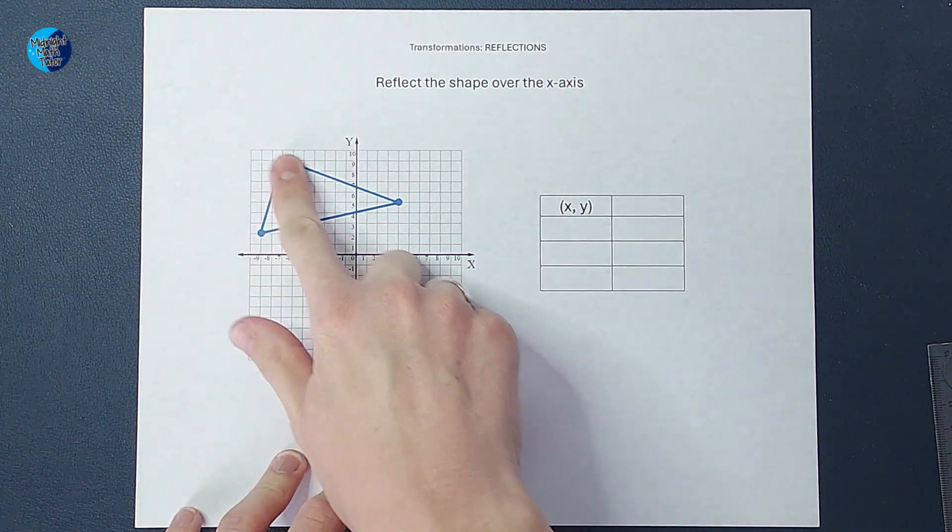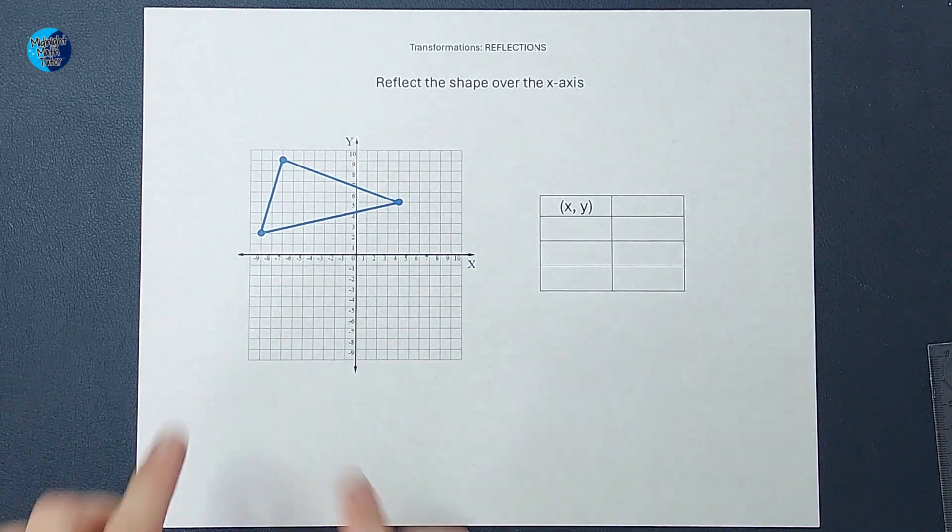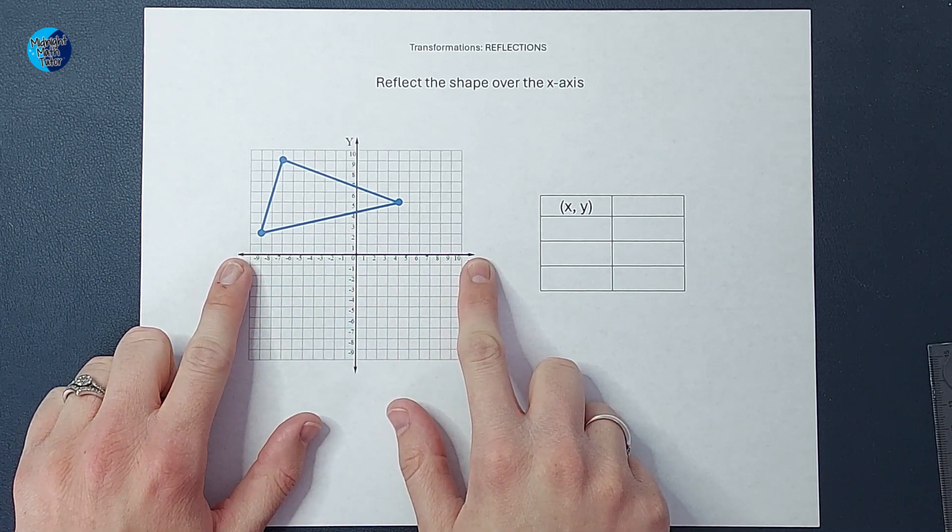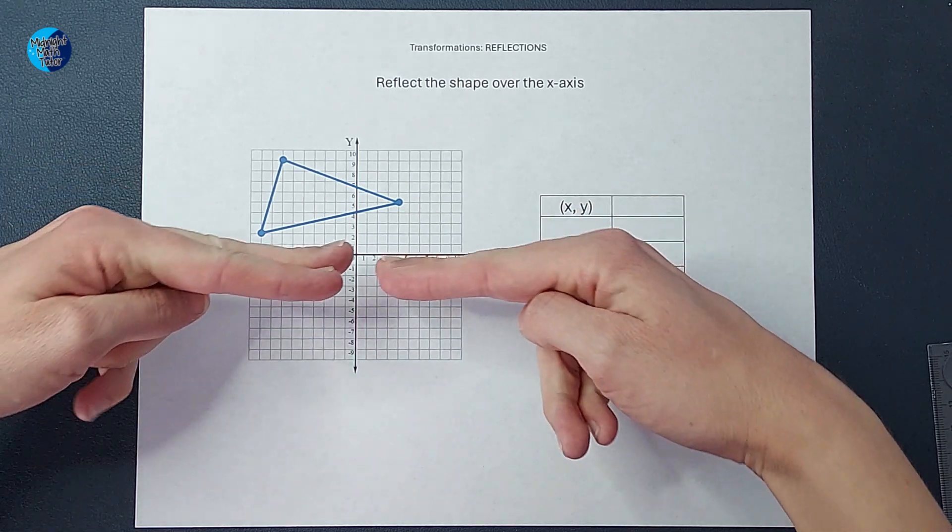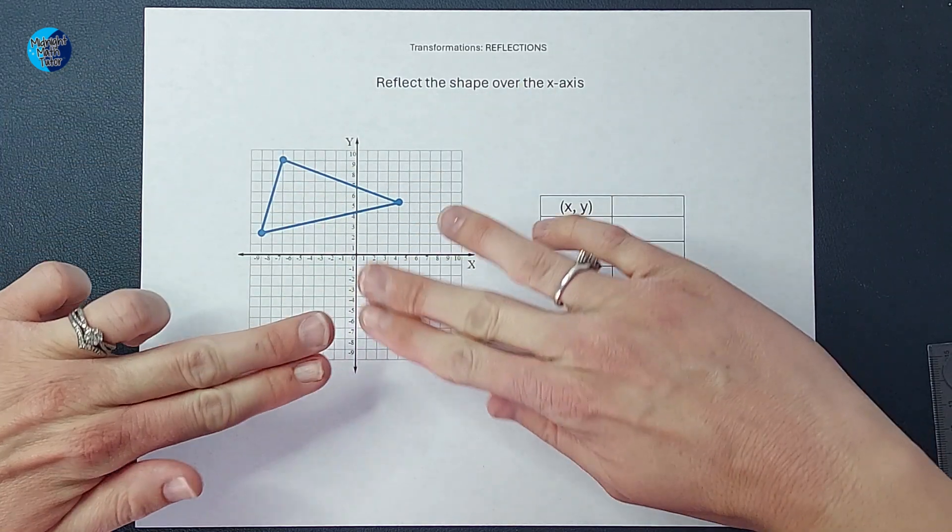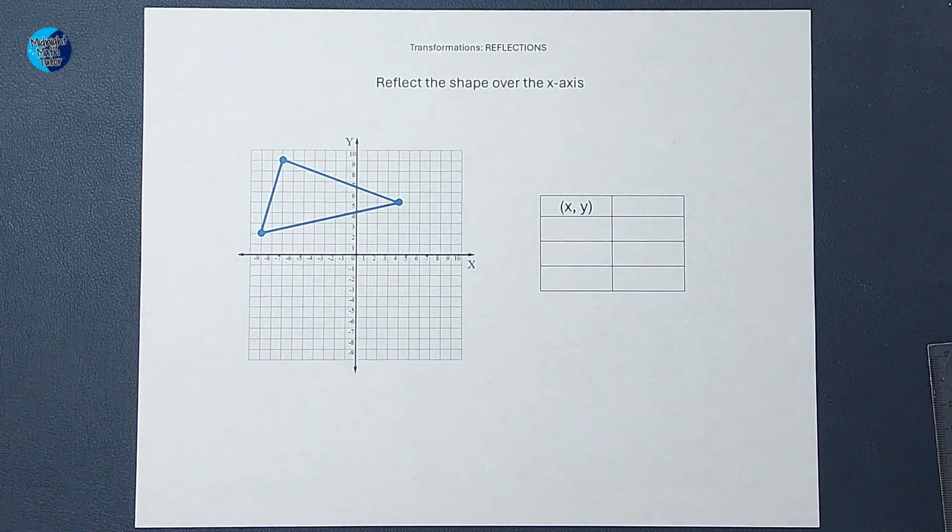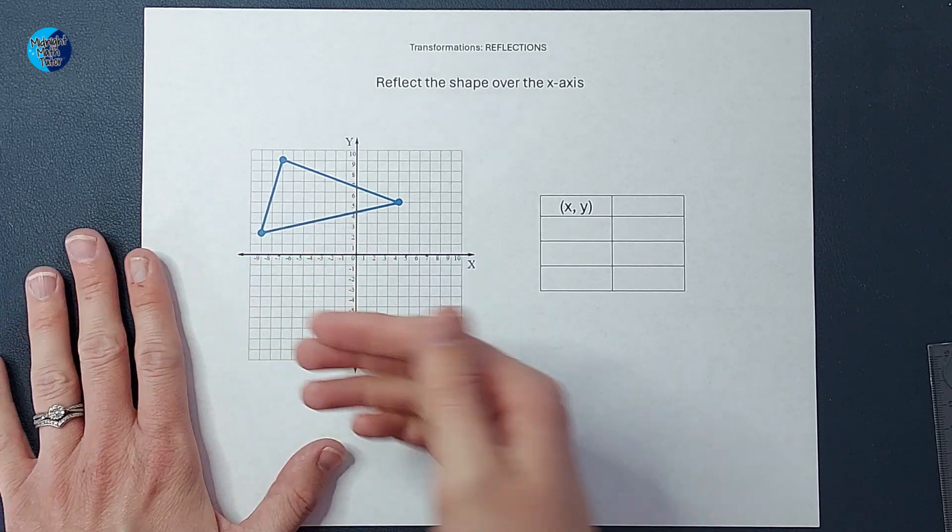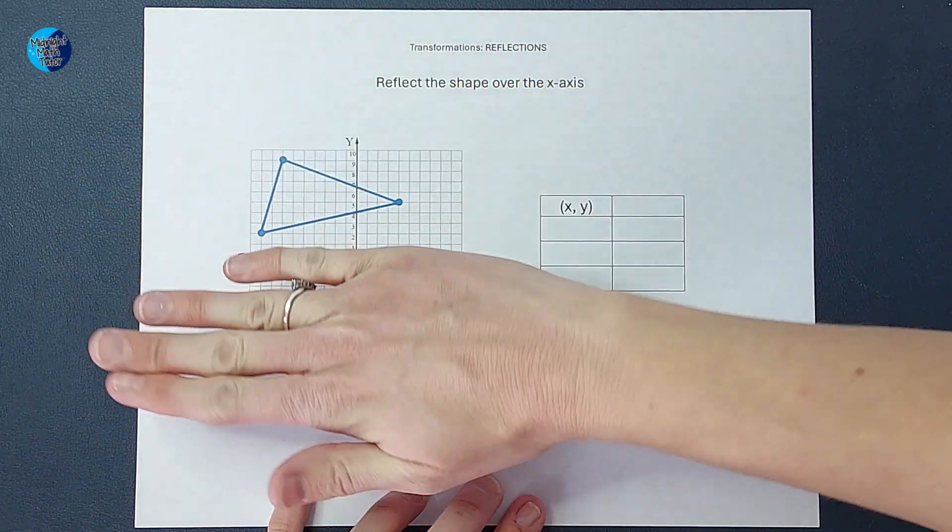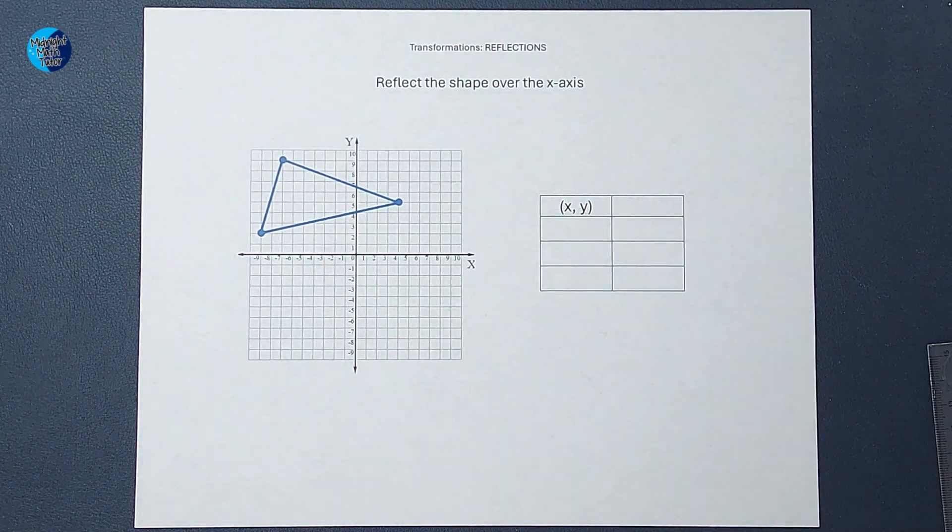We have this big triangle here and we want to reflect it over the x-axis. So how I like to think of it, here's my x-axis, is one way to think of it is as if this were a mirror, what this shape would look like on the other side. Another way I like to think of it is if this triangle were like wet paint or something and I were to fold across the x-axis, what it would look like on the other side. That's what a reflection is.